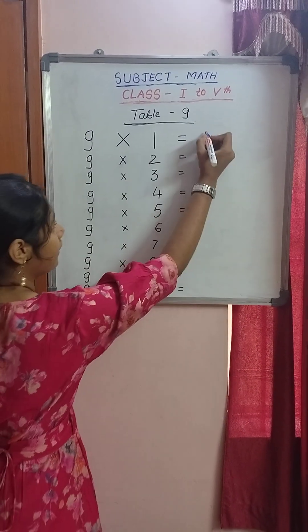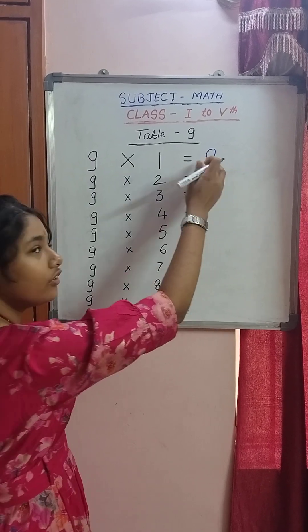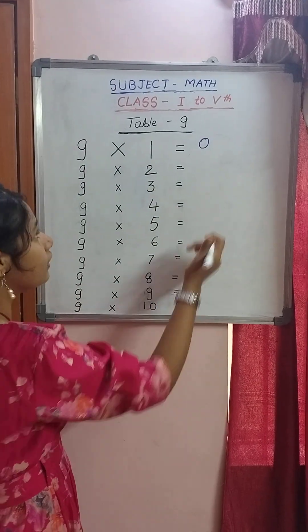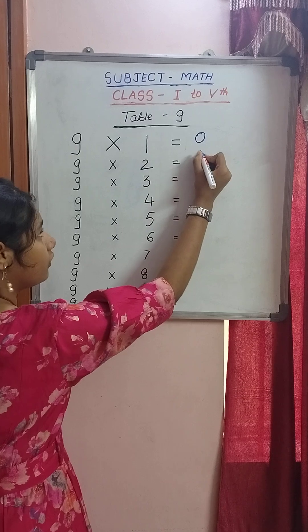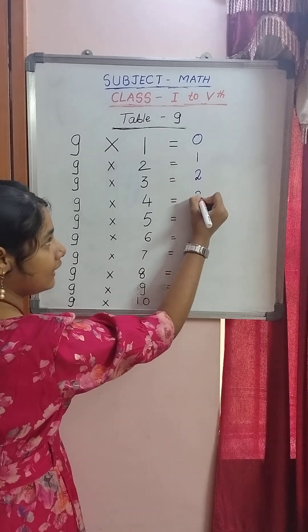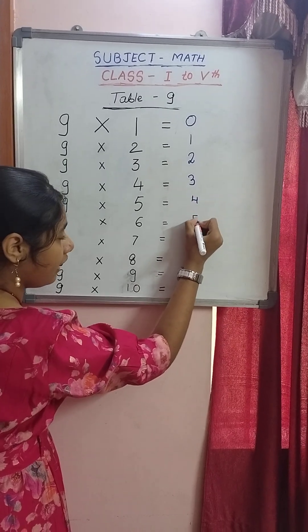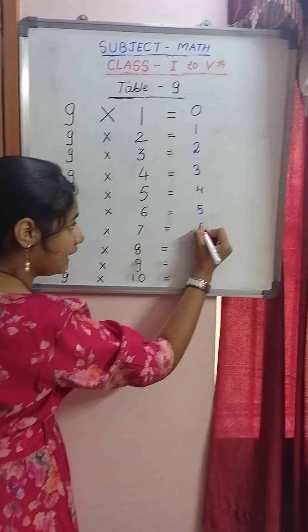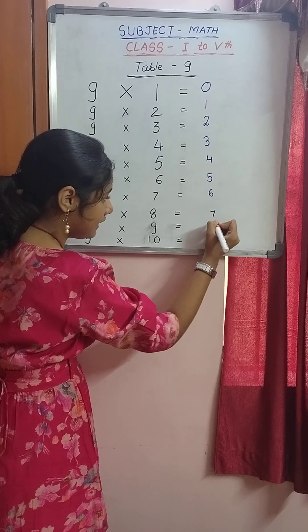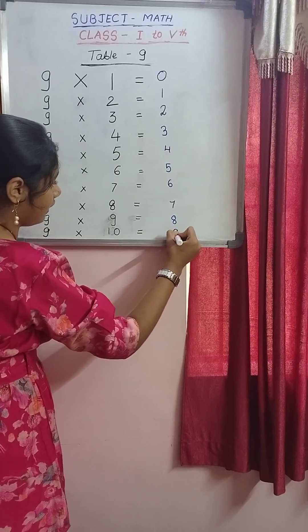So first we will write a zero over here and we are going to continue writing it till 9. So zero, 1, 2, 3, 4, 5, 6, 7, 8 and 9.